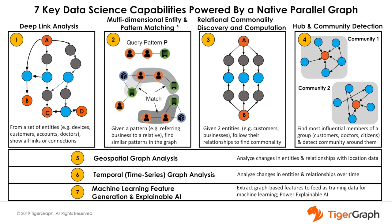Next is multi-dimensional entity and pattern matching. Given a meaningful pattern of relationships, search the graph for all the occurrences of this pattern. A native parallel graph like TigerGraph can find such patterns quickly, often in real time. This is useful in finding customers who are likely to churn or are ready to buy the next product or service, members or patients who are suitable for a specific type of drug or procedure, and citizens or residents who may be involved in fraud, money laundering, or terrorist activities.